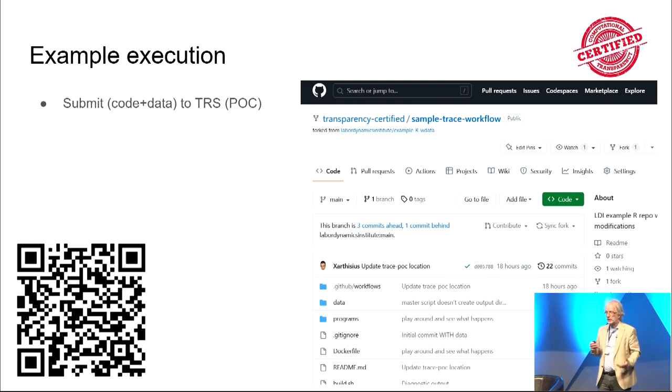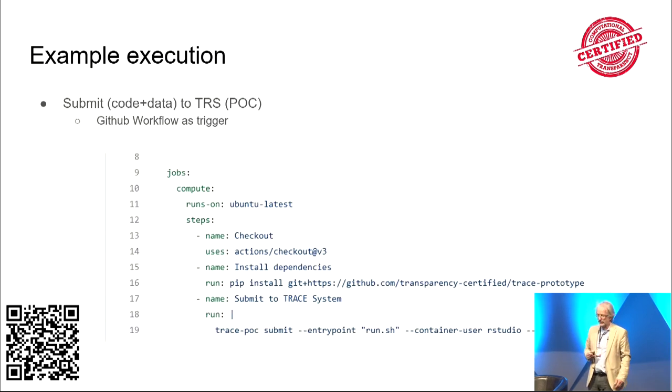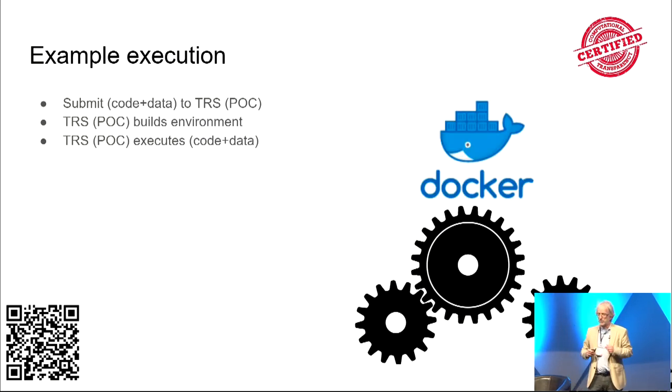And to sort of demonstrate how all of this works, we actually have a proof of concept. Now, obviously, in the proof of concept, we're not talking about a terabyte of data and 250 GPUs. We've got a very simple example. If you have the time to take a picture of that, that QR code will take you to that actual sample. So, we did this using, as a trigger, a GitHub workflow. We send it off to our trace-compatible system. It builds the environment, executes the code. So, now we have a description of the entire system that's out there.